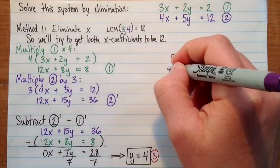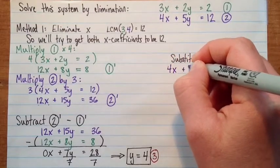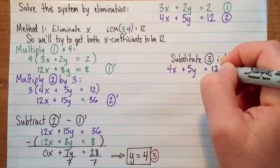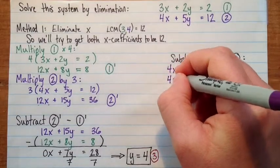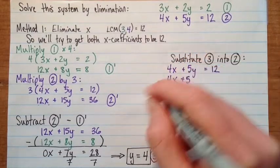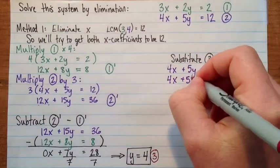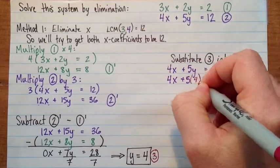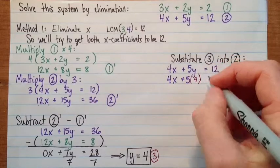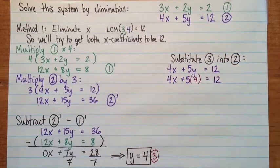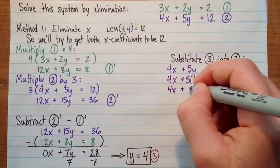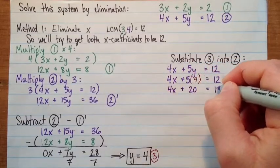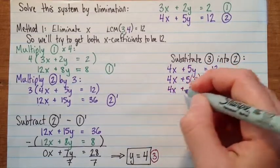So equation 2 is 4x plus 5y equals 12. And then I'm going to substitute y equals 4. So that gives us 4x plus 20 equals 12.